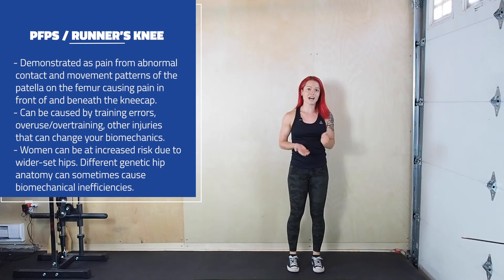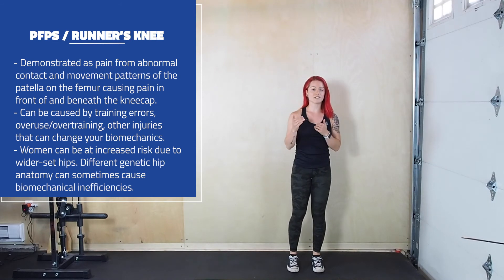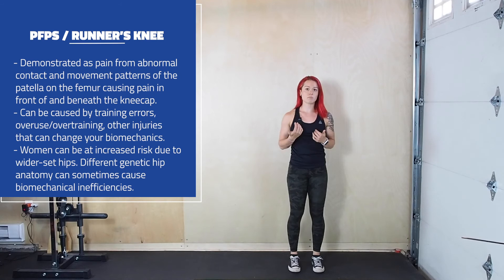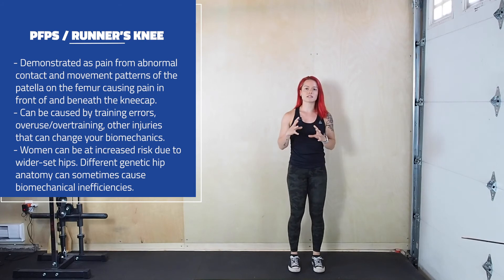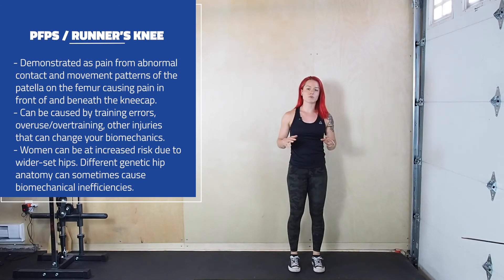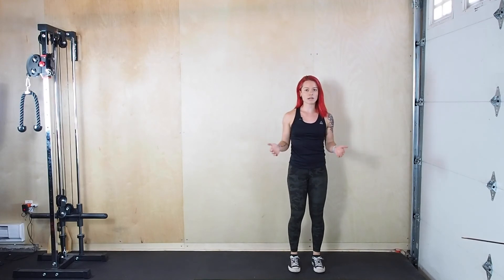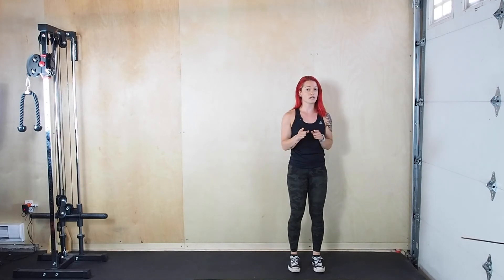Runner's knee, or patellofemoral pain syndrome (PFPS), is characterized by pain under or in front of the kneecap. This differs from medial and lateral knee pain in that you feel it in the front of your knee instead of the sides. It's often caused by overuse, impact, and poor biomechanics during movements. It's called runner's knee because if you have an imbalance at the hip, knee, or foot, something can occur at the knee that makes it feel painful. This is actually more common in women because of what's called the Q-angle — the angle at which the hips orientate downward toward the knees. Because women have wider hips, there are more instances of the knees going inward from the hip, which can put you at a disadvantage for runner's knee, but at an advantage for powerlifting.